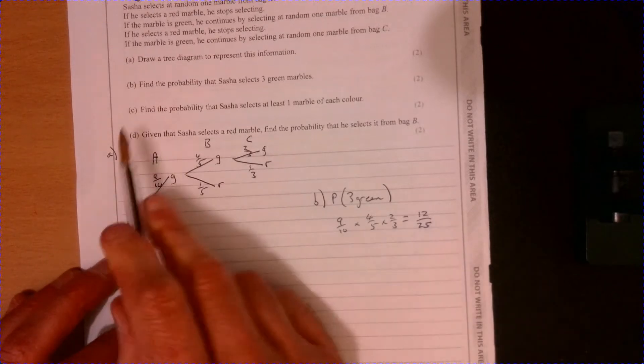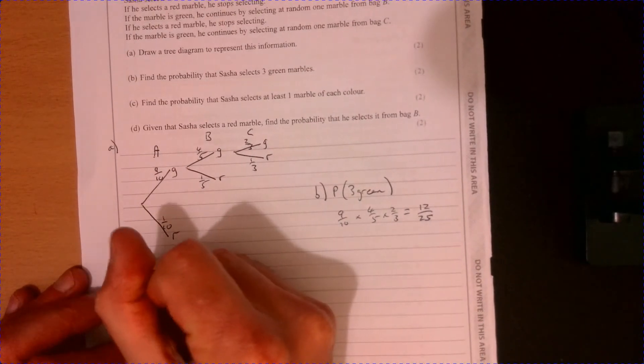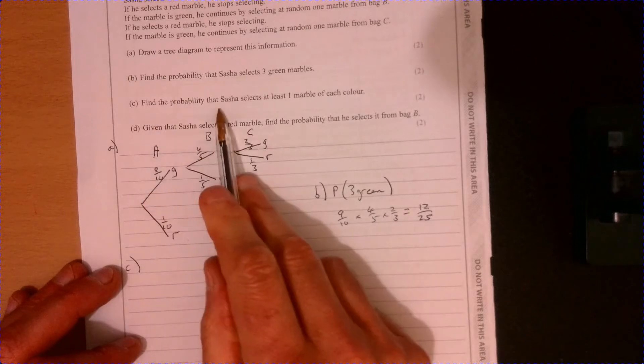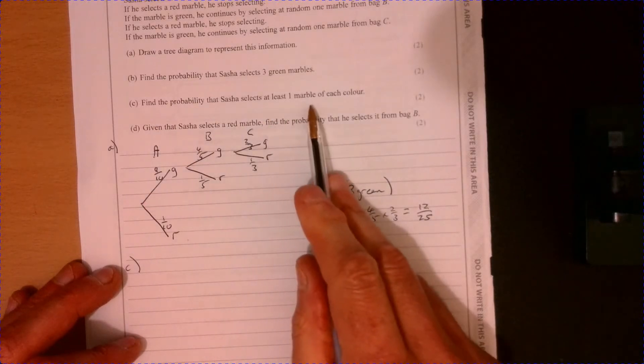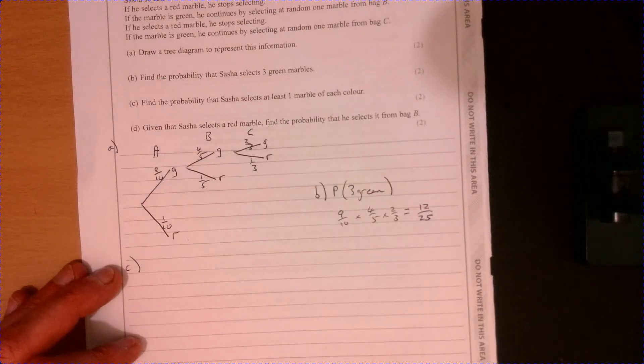And that's going to equal 12 over 25. Right. Part C. So let's have a look at part C. See what that's actually saying.